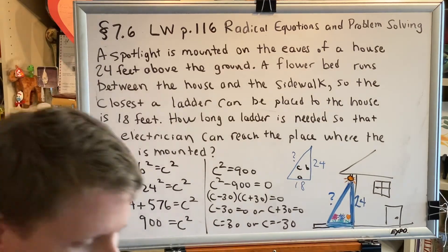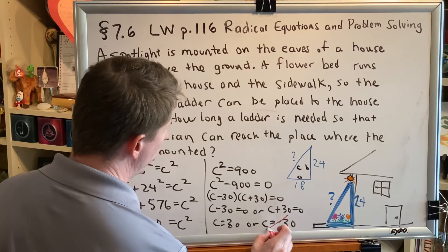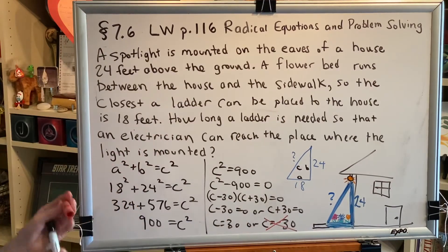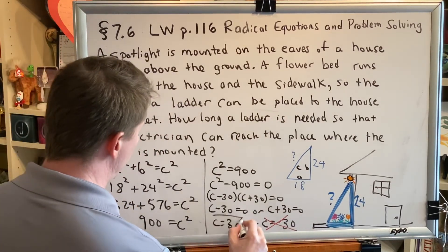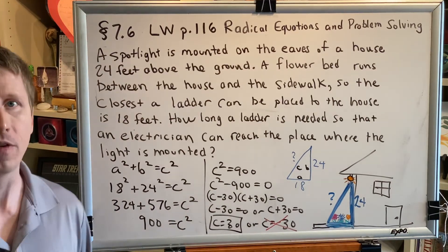But remember, c represents a distance—it's the length of the ladder—and a distance cannot be negative. So we throw away our extraneous solution and we find that our final answer is c = 30. So the ladder length needs to be 30 feet.